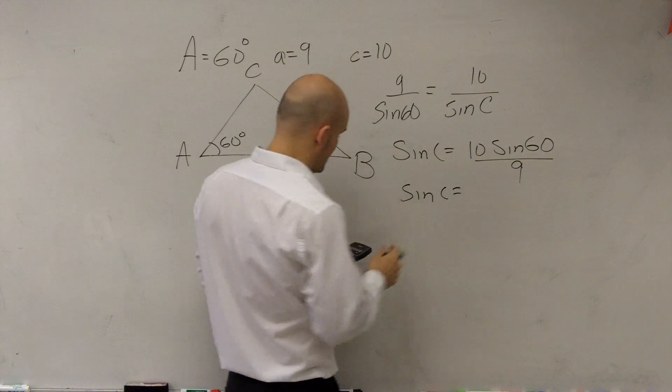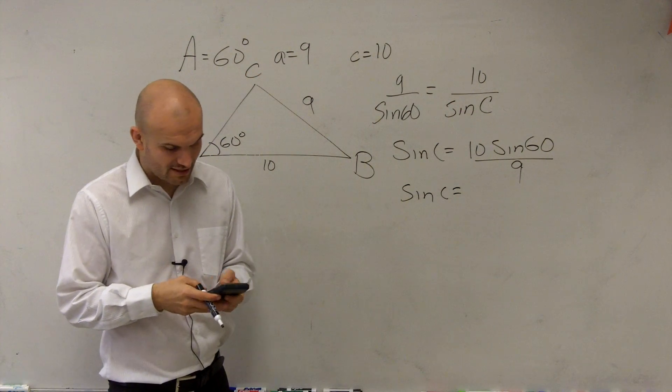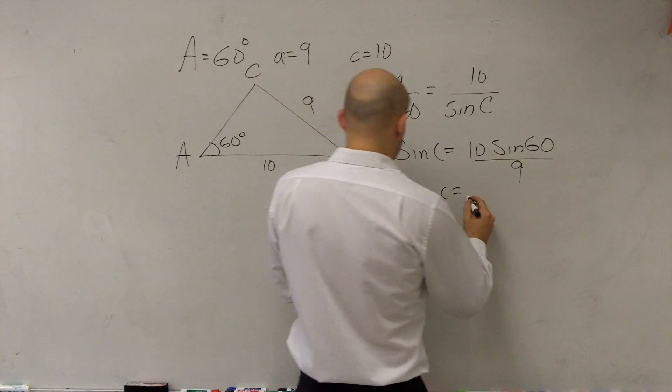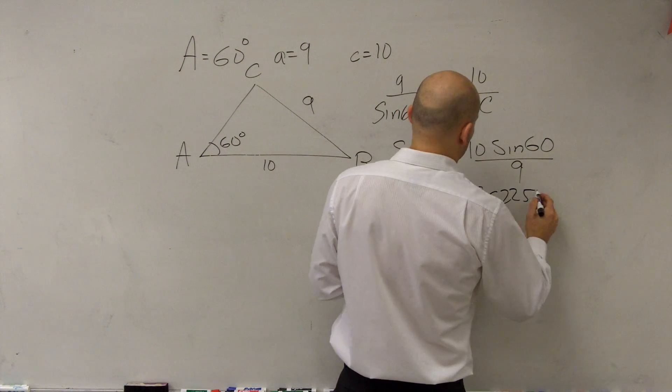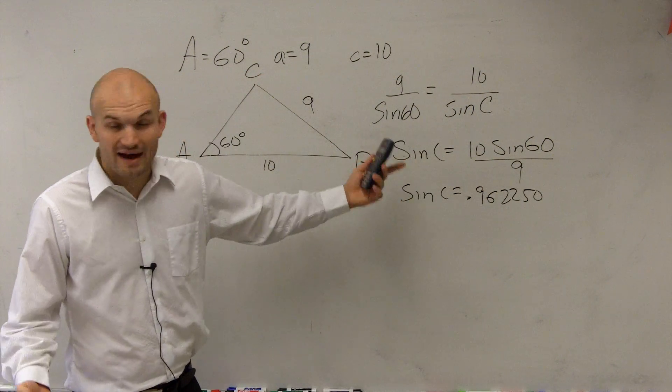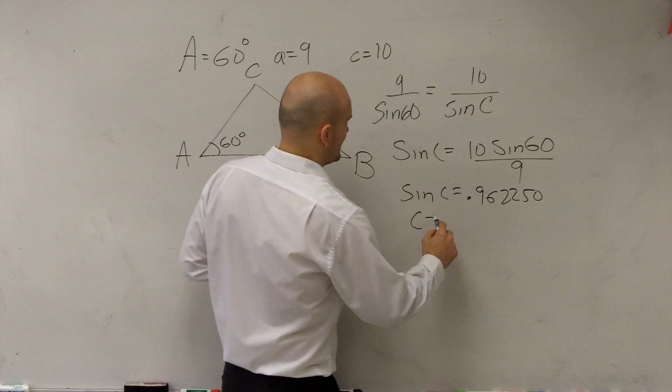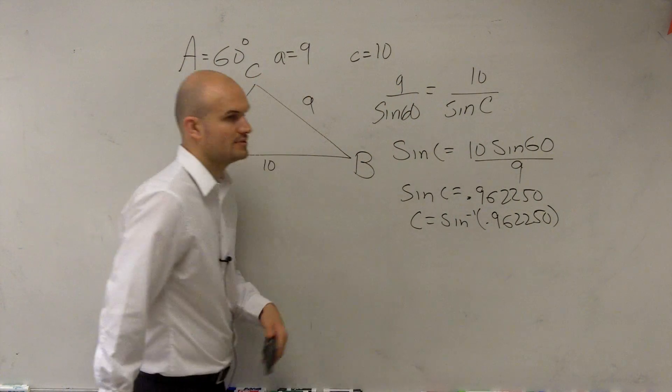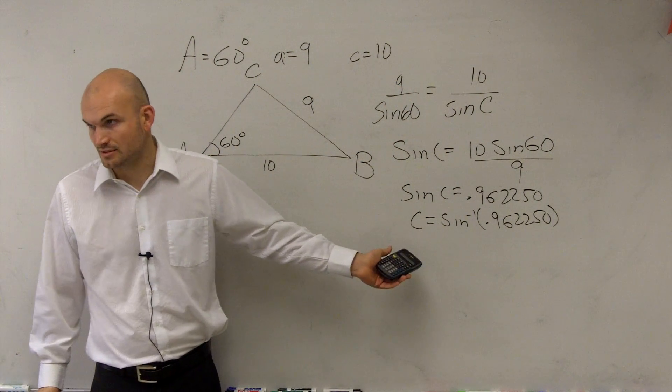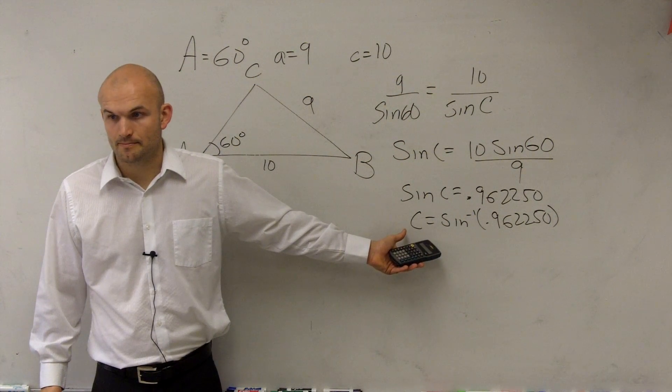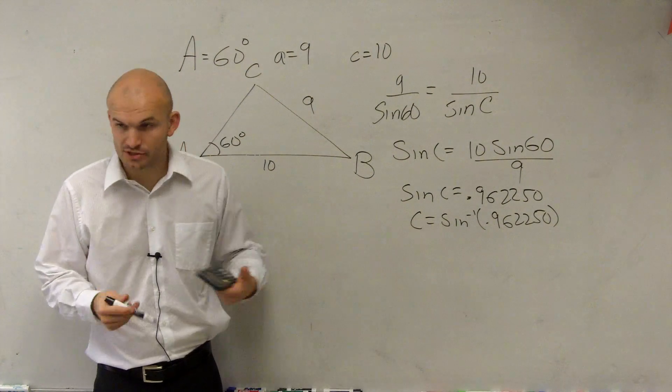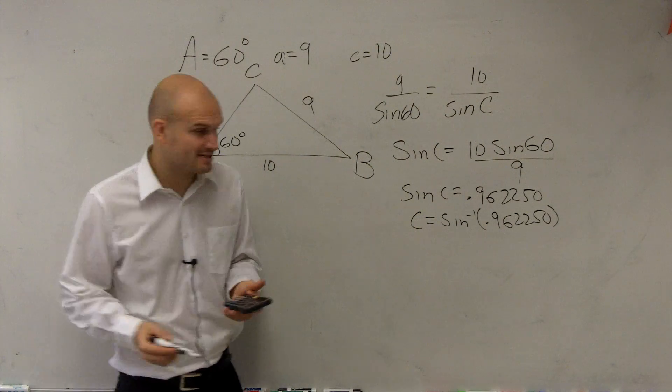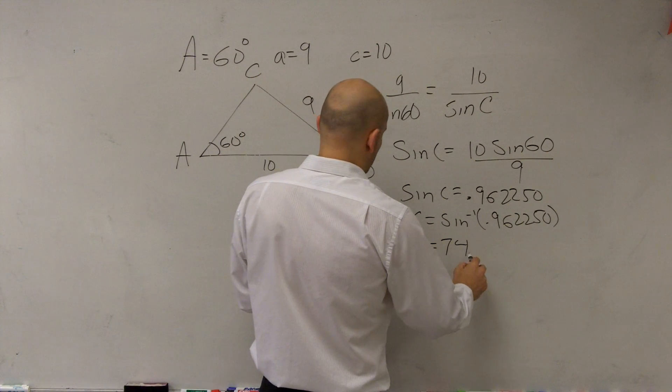So you have sine of c equals, let me do this again for you, 60 sine times 10 divided by 9. You're going to get c equals 0.962250. Now, to find what c is, you do c equals sine inverse of 0.962250. Does everybody understand that to find the angles? You have to apply it. Now, I do the inverse of that, and I say, c equals 74.21.